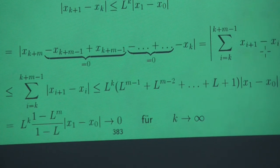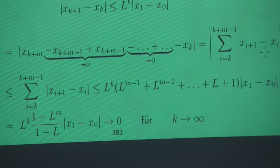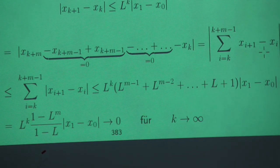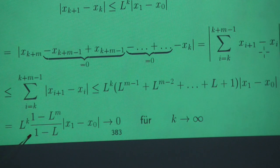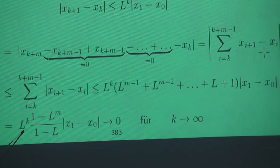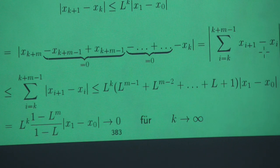We apply the formula for the finite geometric series. Now let's look at what happens with this term for k towards infinity. M is fixed, L is fixed — so we have a constant times L to the power k. This is why L has to be smaller than 1: only then does this converge to zero. Thus we have proven that our sequence of iterative approximations is a Cauchy sequence, and because it's a Cauchy sequence in the real numbers, it converges.